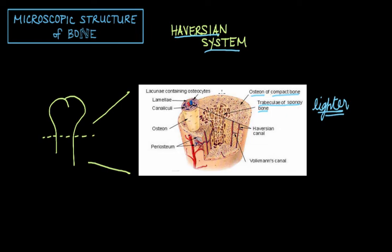Each of these layers is called a lamellae. In the center of these layers is a canal called the Haversian canal or central canal. In this canal travels blood vessels, lymph vessels, and nerves.